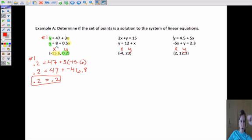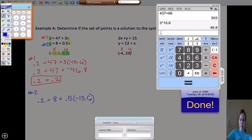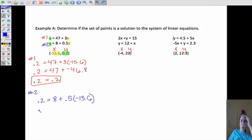Now, is it the solution for both? So in a different color here, we'll check number 2. So number 2, does 0.2 also equal 8 plus 0.5 times negative 15.6? That's just going to be half of it, which is negative 7.8. So 0.2 equals 8 plus a negative 7.8. And look at that, 8 minus 7.8 is 0.2.